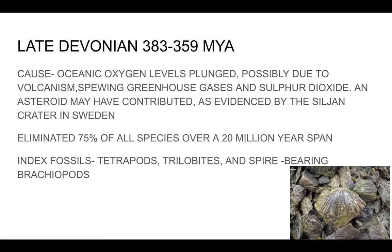The late Devonian extinction was caused by plunging oxygen levels due to volcanism, and there may also have been an asteroid hit — evidenced by a large crater in Sweden. It eliminated 75% of all species over 20 million years, unlike the sudden Mexican impact. Index fossils for this period include tetrapods, trilobites, and spire-bearing brachiopods.